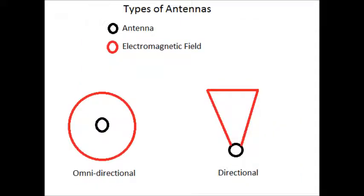There are two major types of antennas. The black will represent the antenna and the red is going to represent the electromagnetic field. The omnidirectional on the left has the antenna in the middle. The field radiates in all directions. Whip antennas are generally omnidirectional.